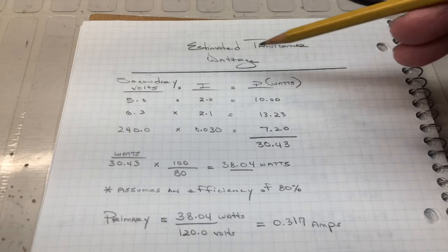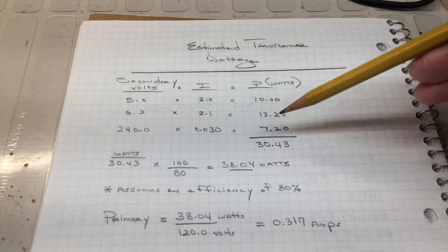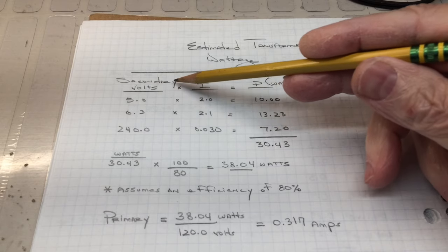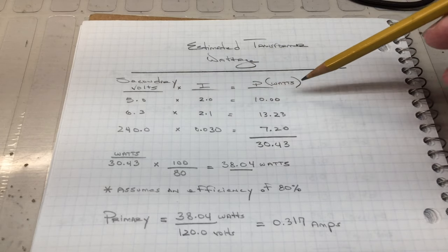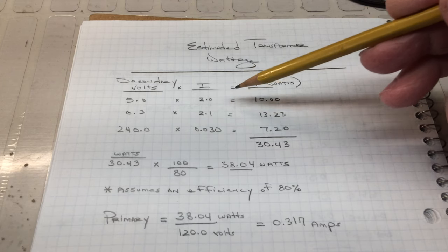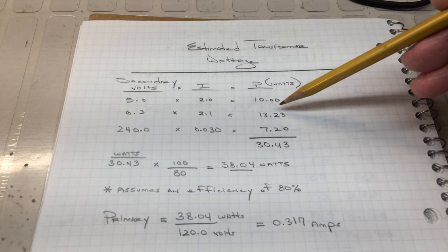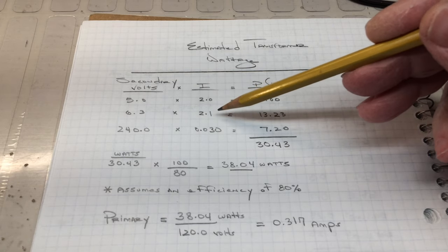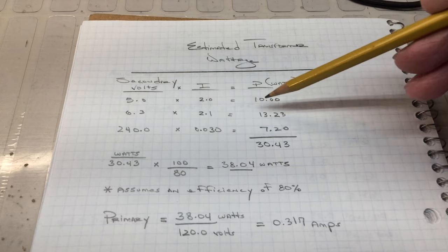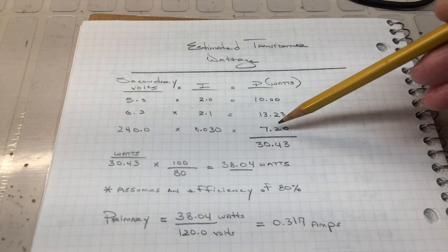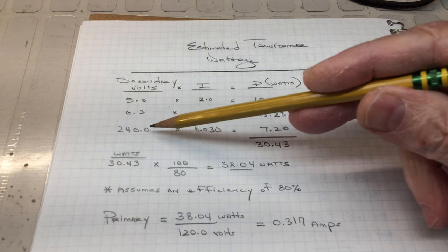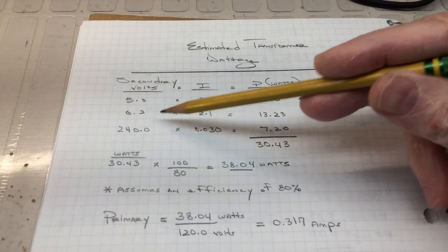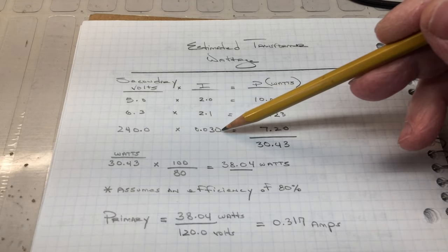Alright, let's recap where we're at here. Again, this is all estimated transformer wattage just based on what we learned. We know we've got the voltage times current equals watts. So we can calculate the 5-volt winding at 10 watts, the 6.3-volt winding based on the configuration we found the receiver in with the wrong dial lamps at just over 13. And again, I'm estimating the secondary voltage 240 for each side of center tap at 30 milliamps.